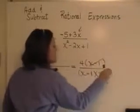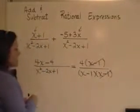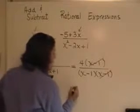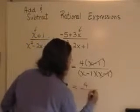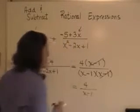As a result, I can reduce or take out a common factor here, top and bottom, of x minus 1. And so my solution is in the numerator 4, and in the denominator x minus 1.